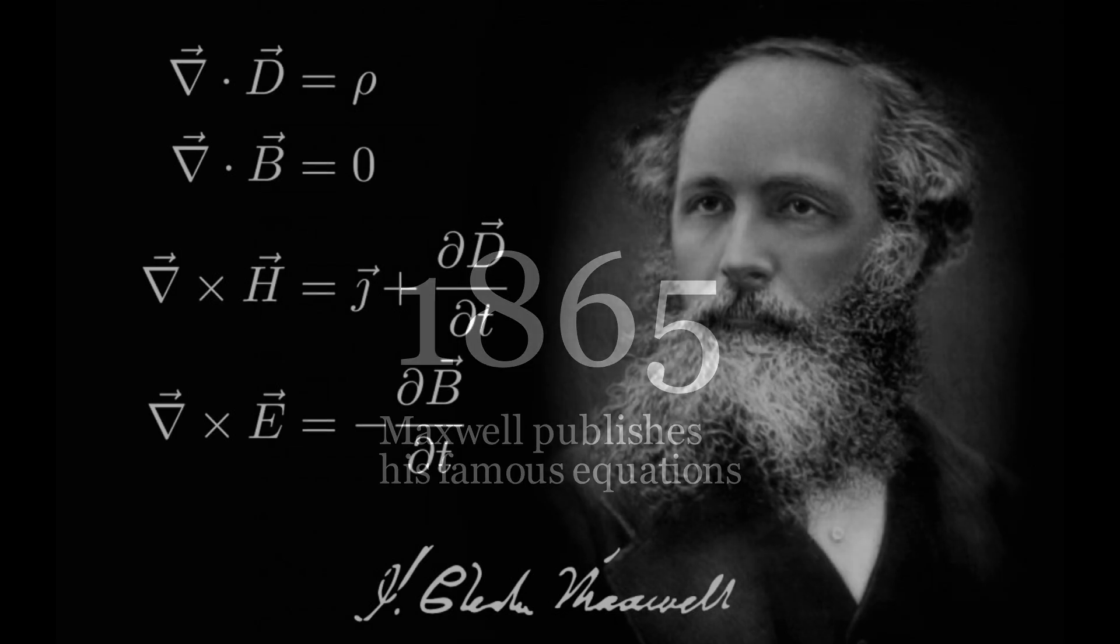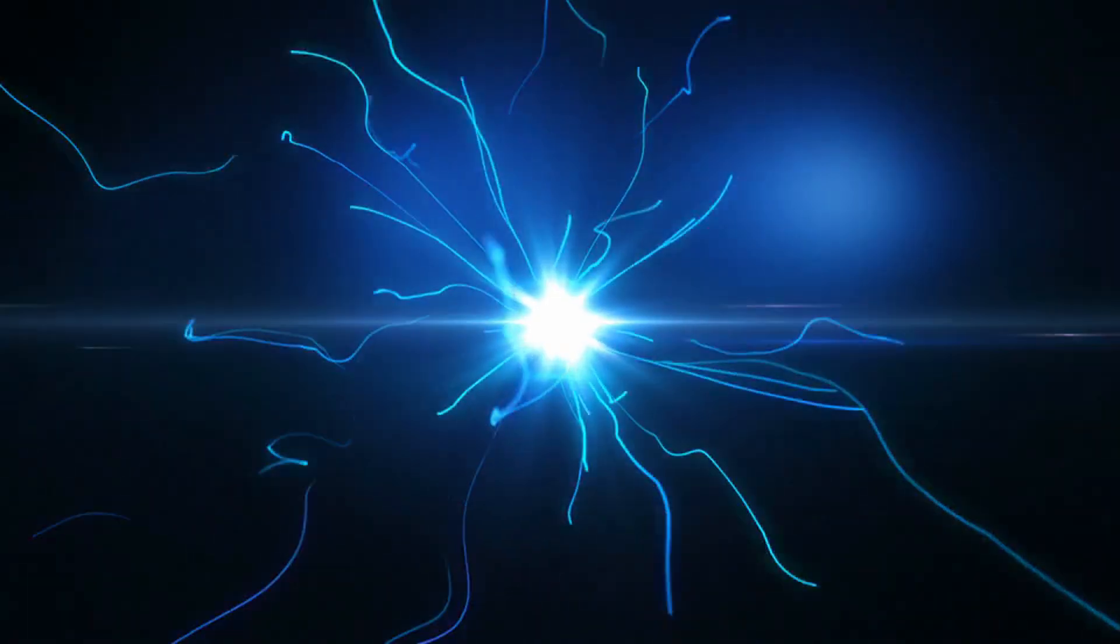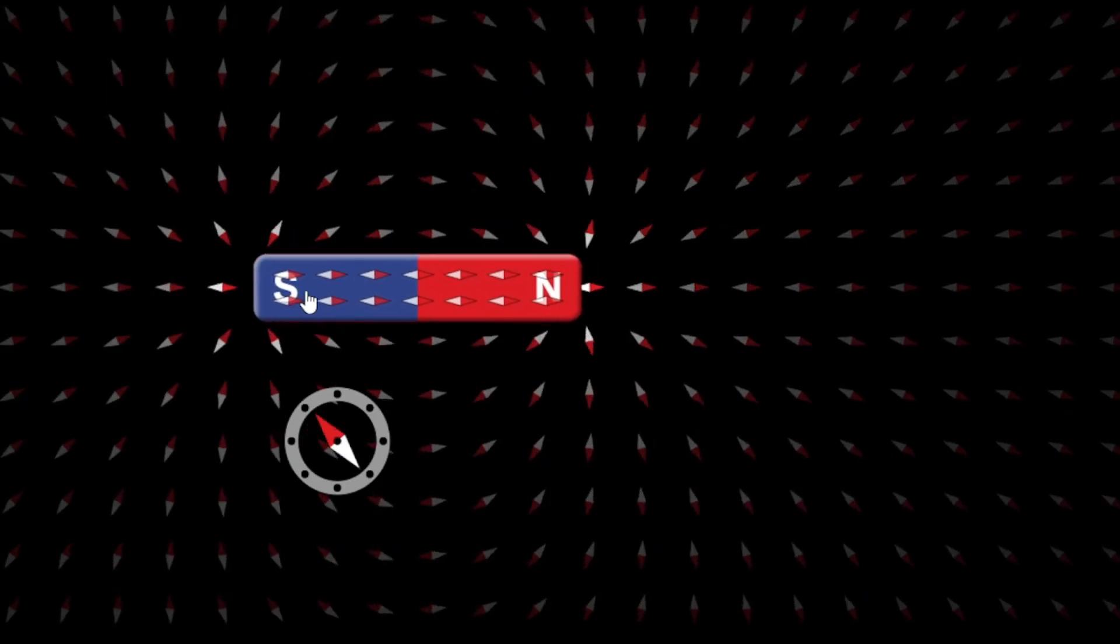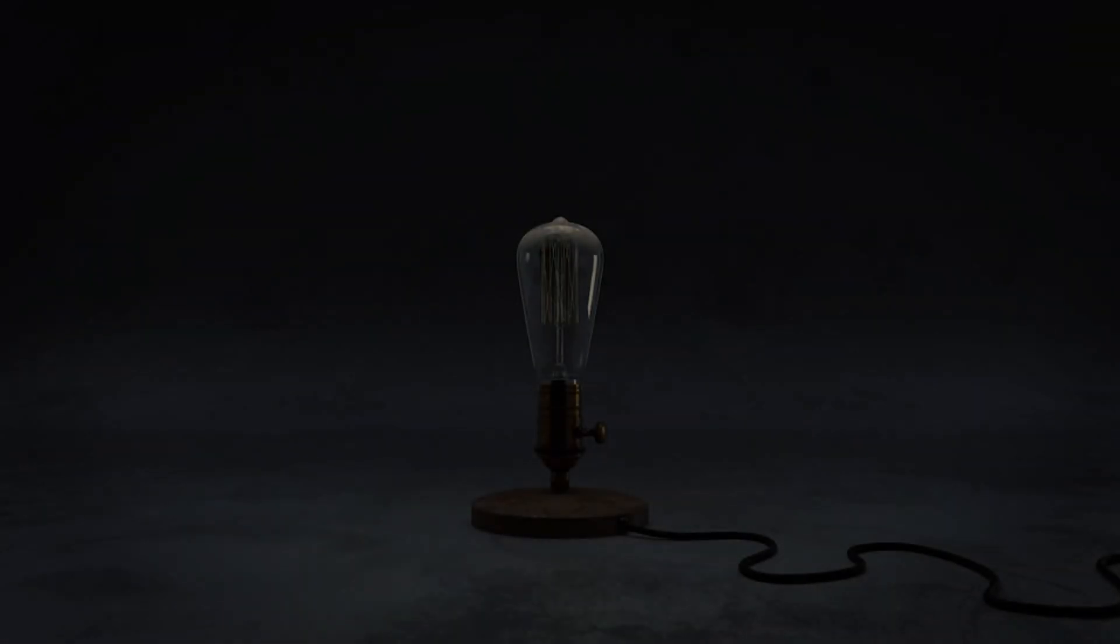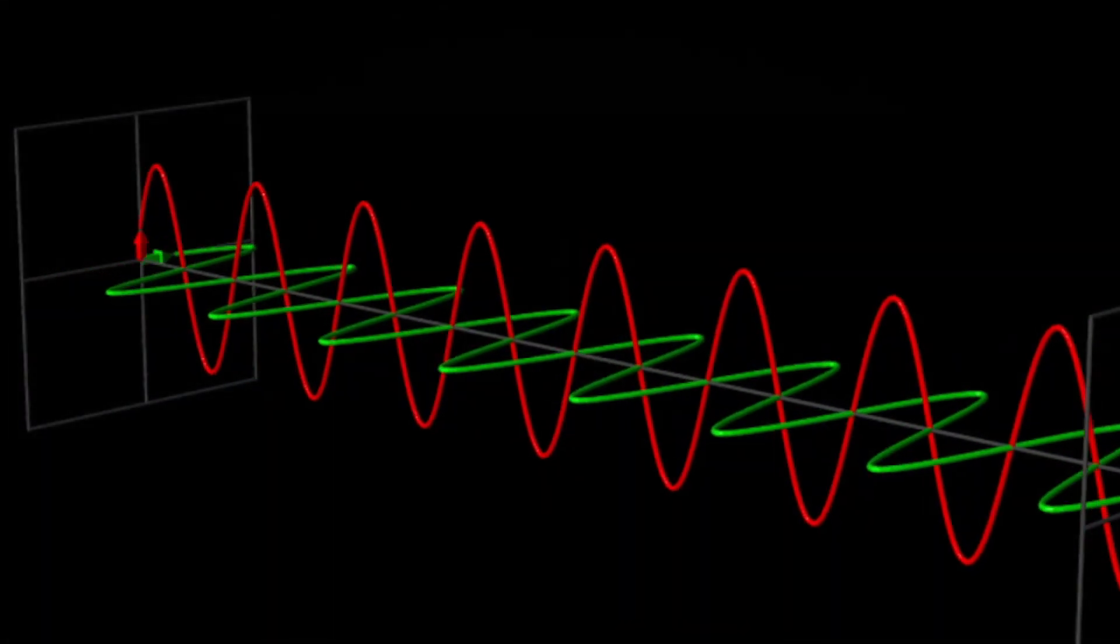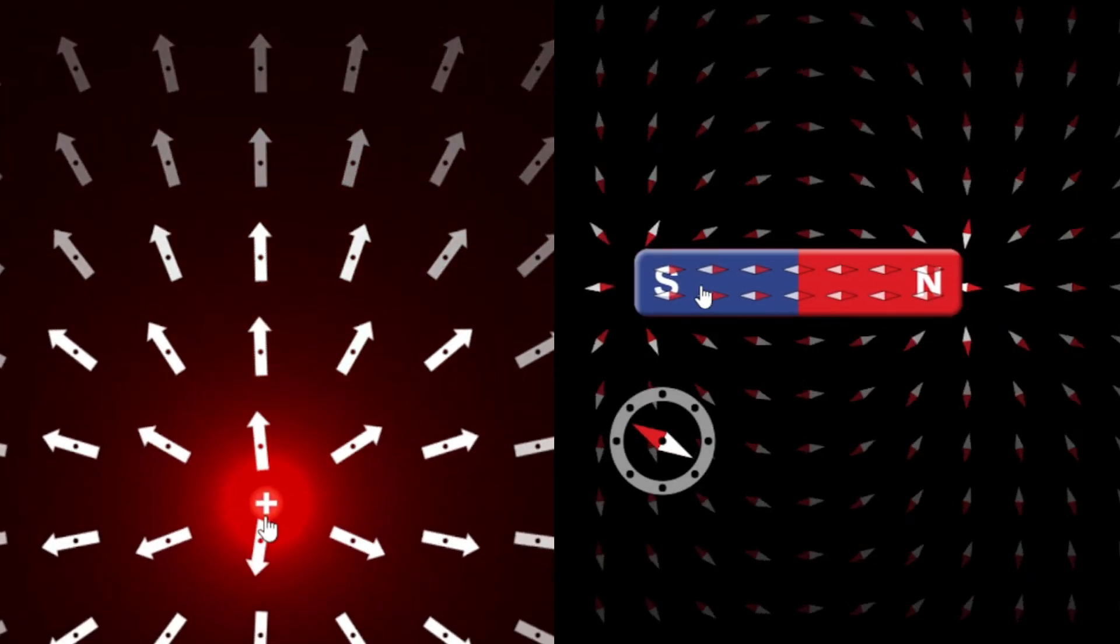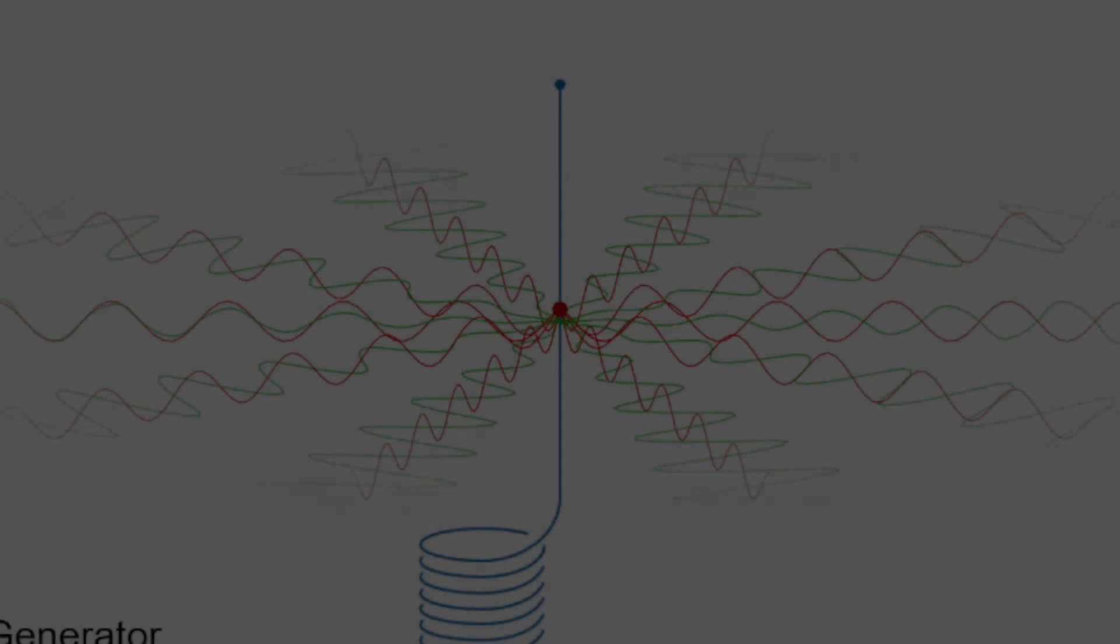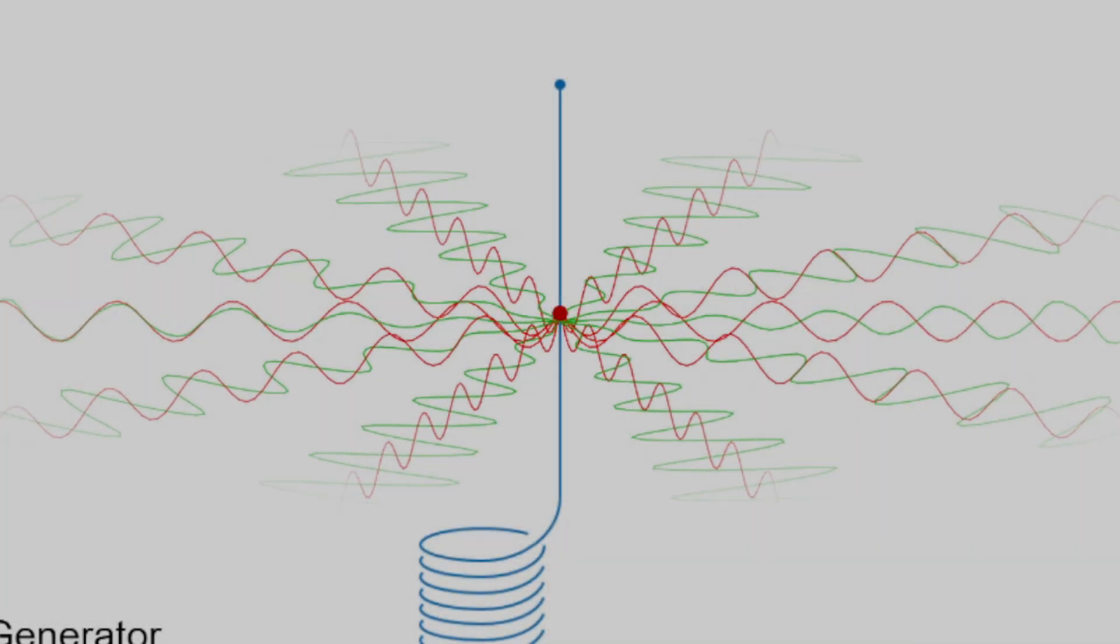However, two decades before the Michelson-Morley experiment were the equations of James Clerk Maxwell. In the 1860s, Maxwell brought together everything we knew about electricity and magnetism and discovered something that didn't just explain light but revealed what it actually is. But how can electricity and magnetism, two seemingly separate forces, be connected to light? To answer that, we need to slow down. Let's take a step back and look at what electric and magnetic fields really are.